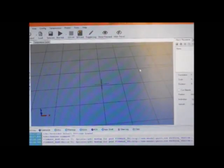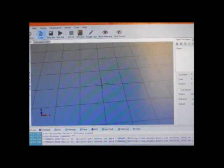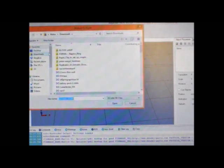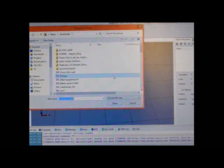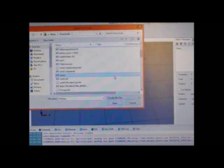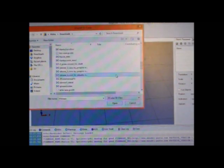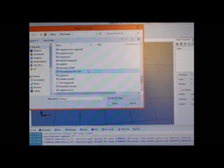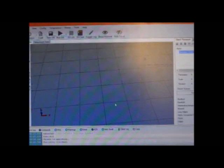Now, let's test print something. Once you upload your new E-steps value, go to Repetier Host, go to load. Download any calibration object. We have downloaded perimeter width from Thingiverse. Open it.